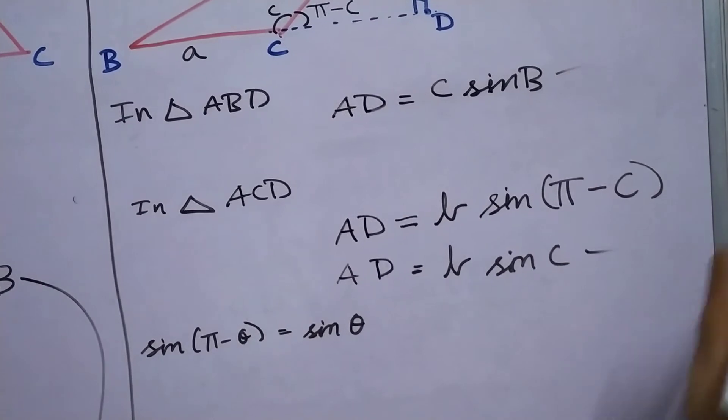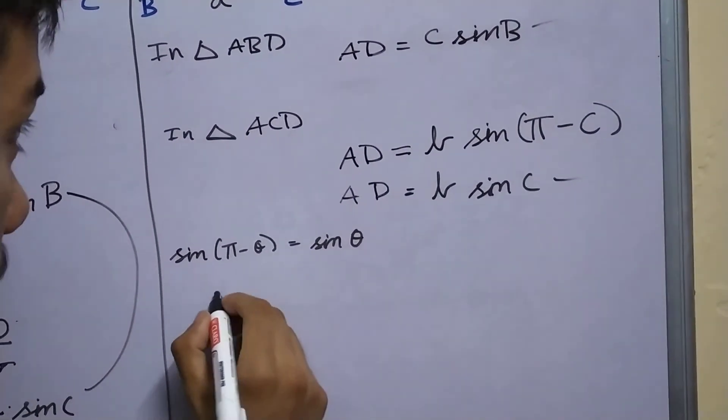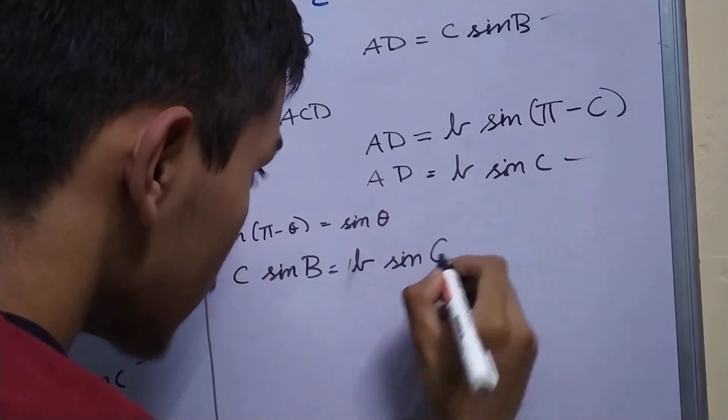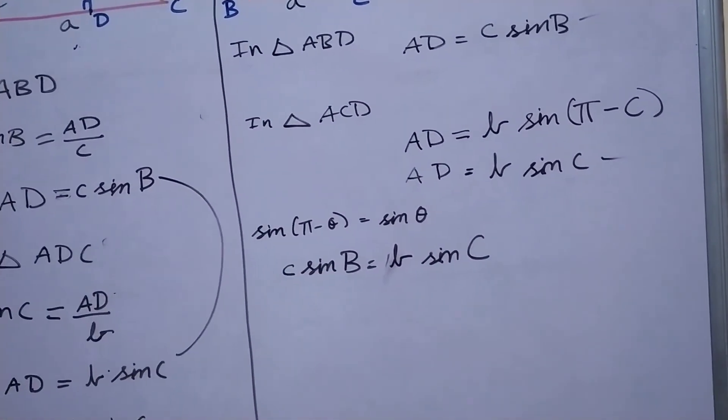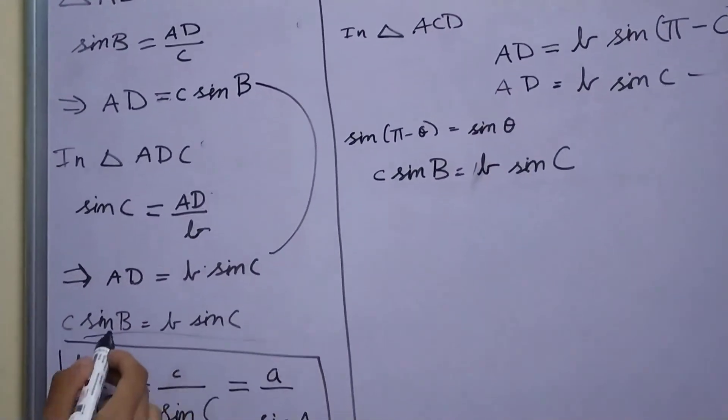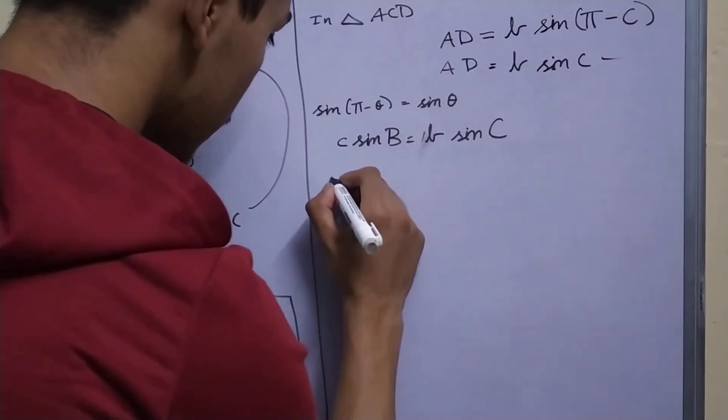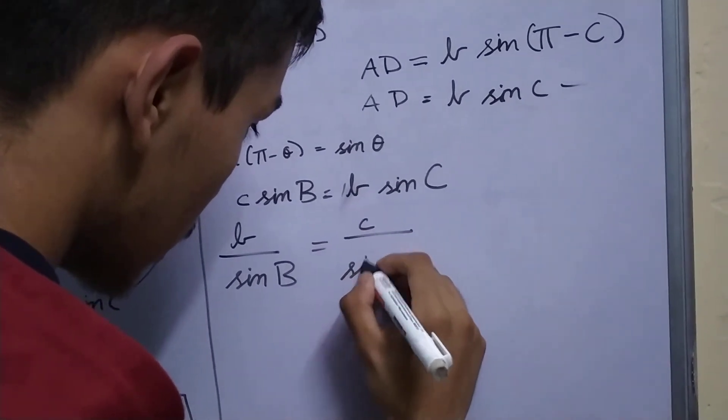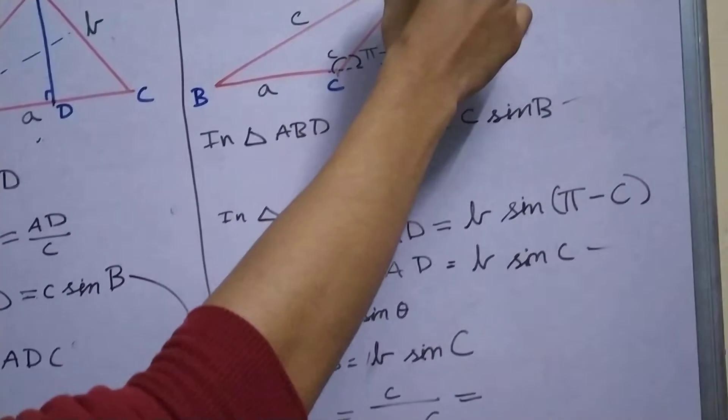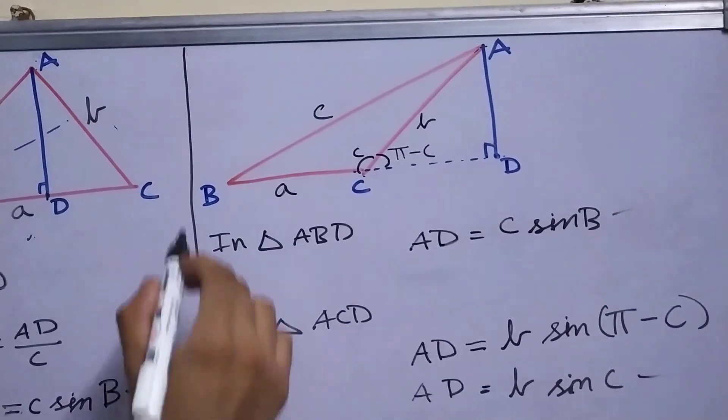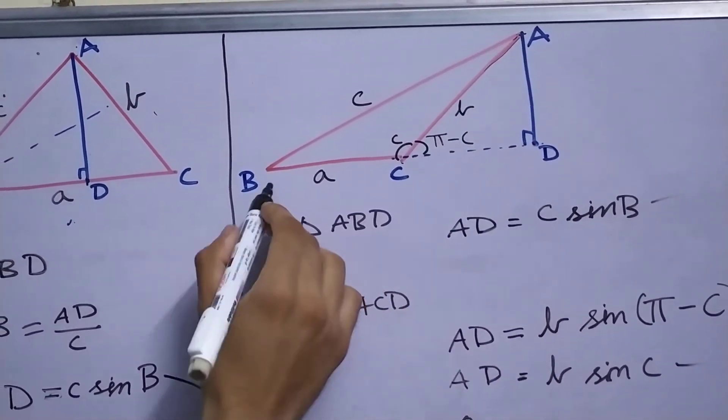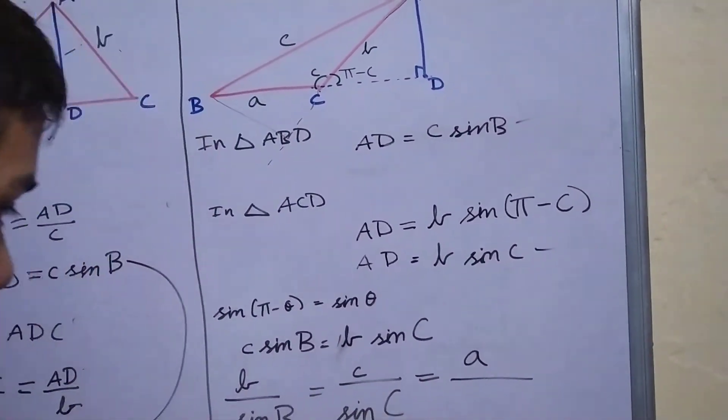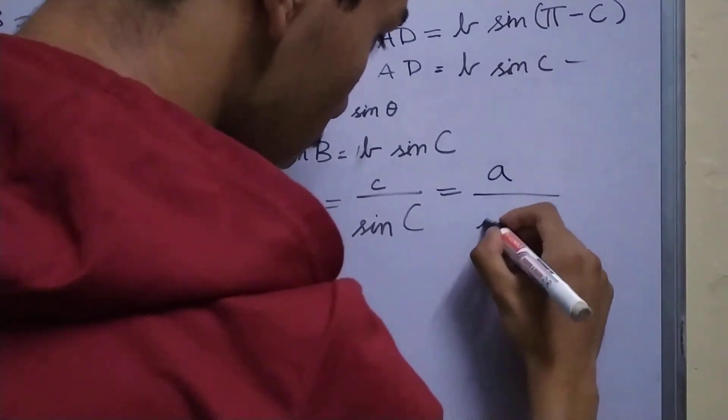And again equating these two equations, we get that c sin B equals b sin C. And just like we got in the acute case, similarly we can say that b upon sin B equals c upon sin C. Similarly, we can do construction like this or extend and do another construction. Now we can say that b by sin B is equal to c by sin C equal to a by sin A.